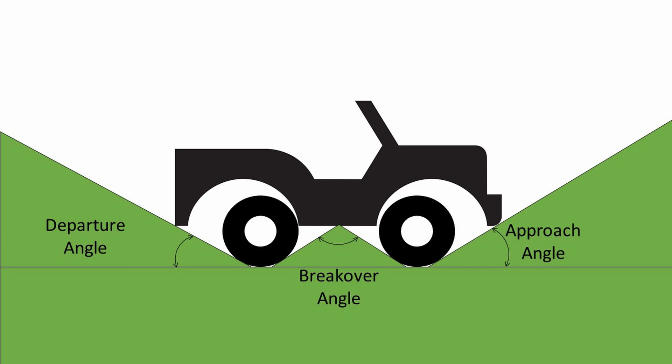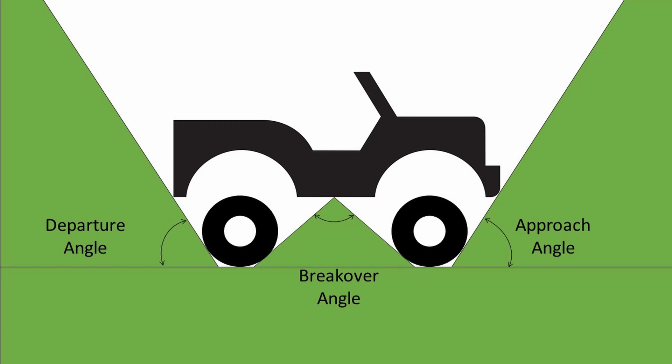Another option is to raise the suspension, pushing the axles down away from the body of the vehicle. This gives better ground clearance and improves approach, break-over, and departure angles. The compromise is that the vehicle becomes much less stable: lifting the body raises the centre of gravity, making the vehicle more likely to tip over on a side slope or when travelling up and down slopes.